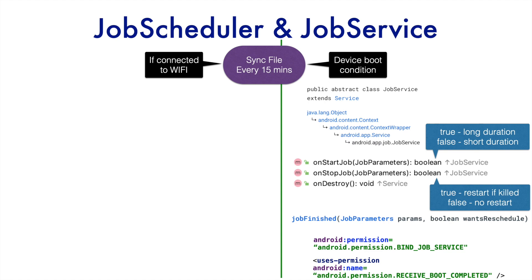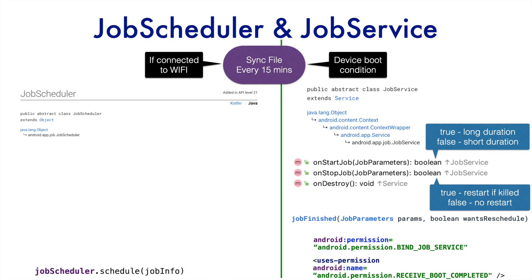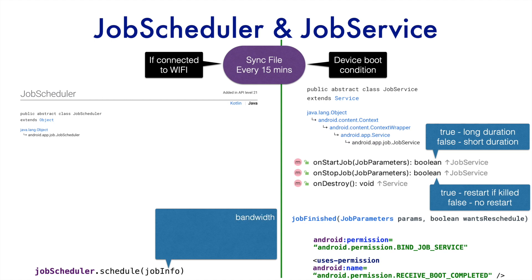Now, how do we schedule this JobService using JobScheduler? JobScheduler has been available since API level 21, which you need to be aware of. To schedule a job you call the schedule() method on a JobScheduler object, passing a JobInfo object as the argument. JobInfo contains all the necessary configuration for when the service should start — for example, minimum bandwidth, minimum battery level, how often it should run, the job ID, whether it should start on device boot, network requirements such as Wi-Fi only or cellular only, backoff policy, and latency.